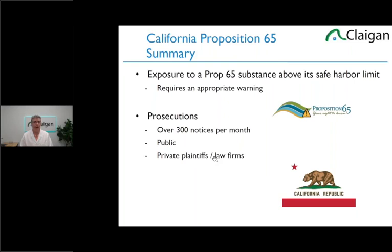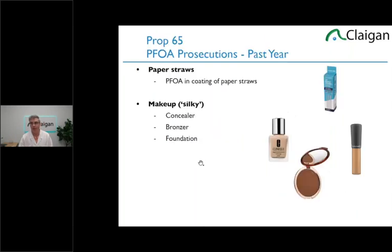Roughly 300 prosecutions a month, over a huge range of consumer and professional products. It's easily the most enforced. You might see 300 ROHS enforcements under European law, and we do see more and more on the European side, but Prop 65 is definitely the most heavily enforced at about 300 a month. They're public, and that's why we know so much about it.